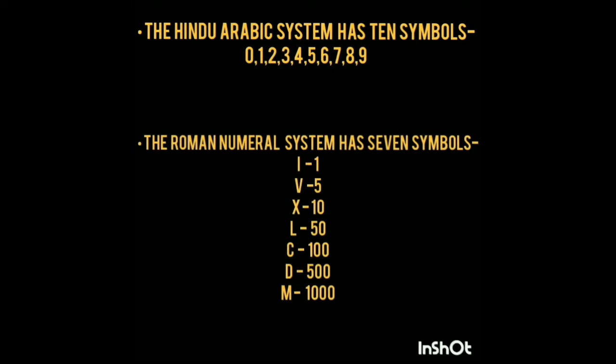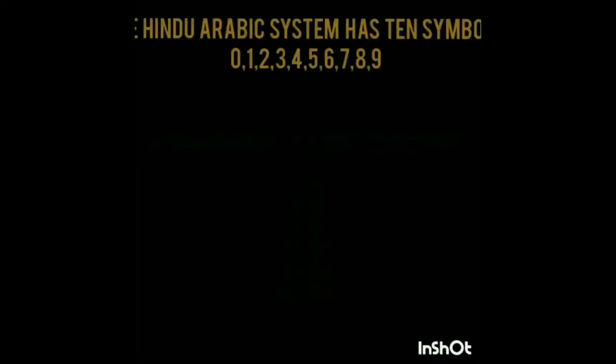The Roman numeral system has seven symbols: I, V, X, L, C, D, M. I shows 1, V for 5, X for 10, L for 50, C for 100, D for 500, and M for 1000.